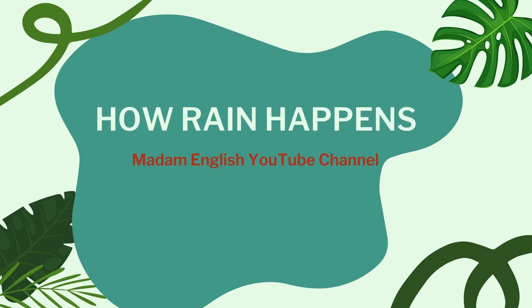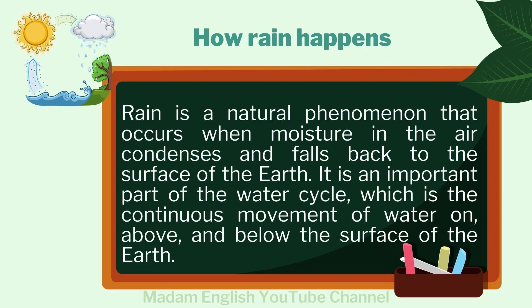How Rain Happens. Rain is a natural phenomenon that occurs when moisture in the air condenses and falls back to the surface of the earth. It is an important part of the water cycle, which is the continuous movement of water on, above, and below the surface of the earth.